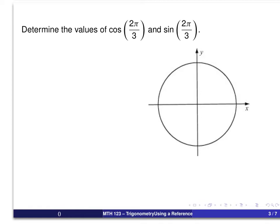For this, we want to first find the terminal point of 2π/3 so we can determine its reference arc. Remember our measurement starts at the point (1, 0), and the arc 2π/3 will have a terminal point about there. The reference arc for that will be measured like that, and the value for that reference arc, x-hat, will be π minus 2π/3, or π/3.